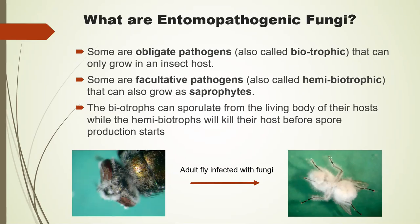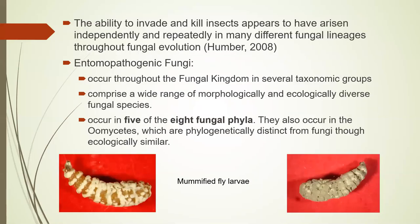Some of these pathogens are what we call obligate pathogens, also called biotrophic — they can only grow in an insect host. Others are facultative pathogens, also called hemibiotrophic, meaning they can also grow as saprophytes. This distinction is important for biocontrol. Biotrophs can sporulate from the living body of their hosts, whereas hemibiotrophs have to kill their hosts before spore production can happen. The ability to invade and kill insects appears to have arisen independently and repeatedly throughout fungal evolution.